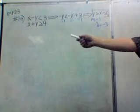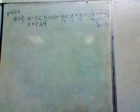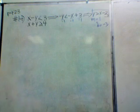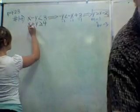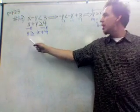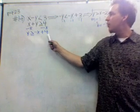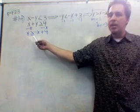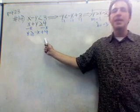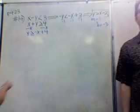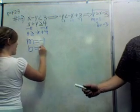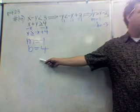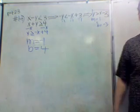For the second inequality, x plus y is greater than or equal to 4, our first step is to subtract x from both sides. We end up with y is greater than or equal to negative x plus 4. We didn't switch the sign here because we didn't divide or multiply by a negative. So m equals negative 1, and b equals 4.